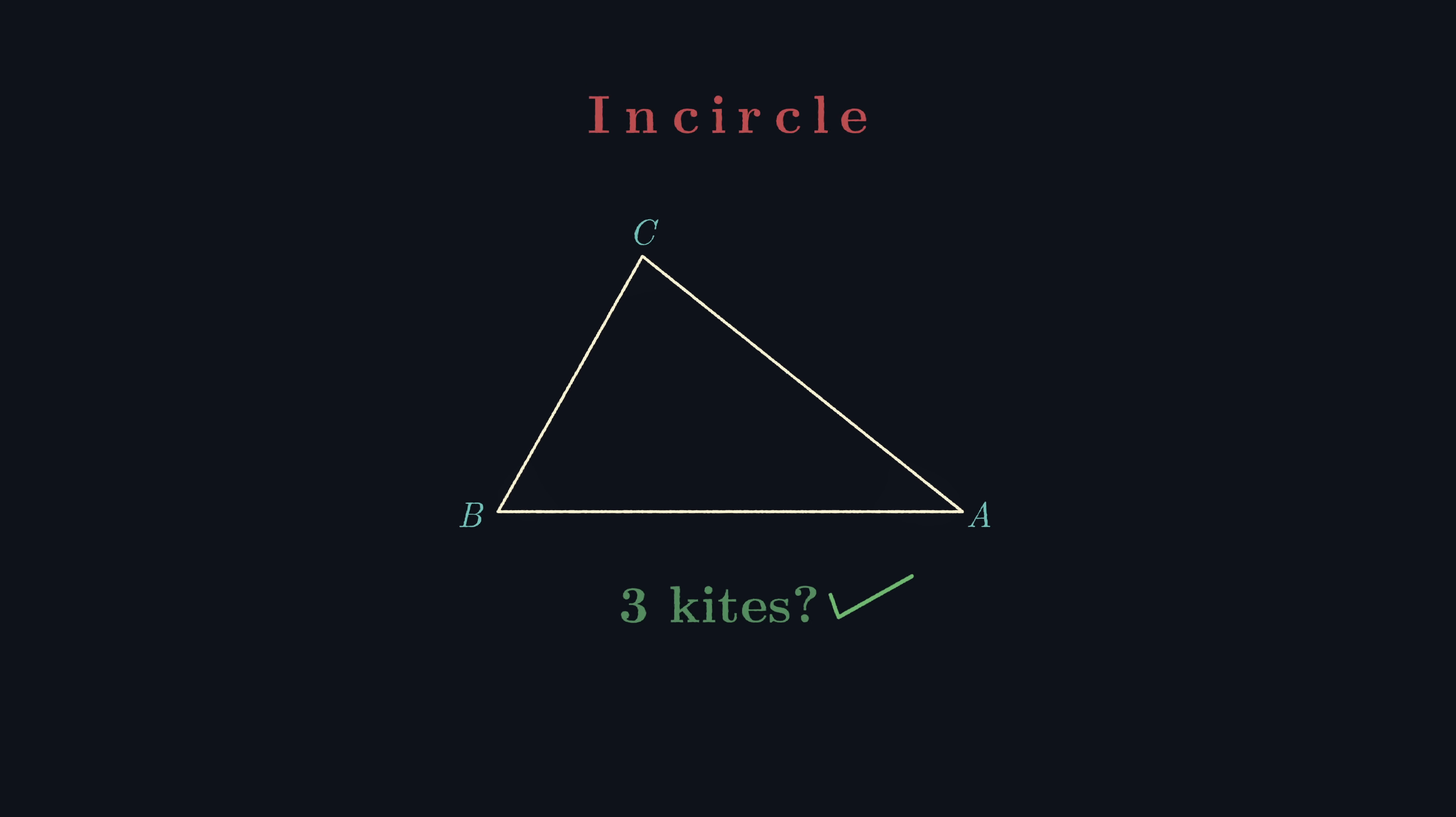Well, we'll use the in-circle. That is, the unique circle tangent to each side of the triangle. But a circle, you may ask, how in any way is a circle relevant? Well, a circle possesses this wonderful property that every radius of a circle has a constant length. Even more importantly, kites have two pairs of adjacent sides of equal length. This suggests we should draw the three radii of the in-circle, which contact each side of the triangle.